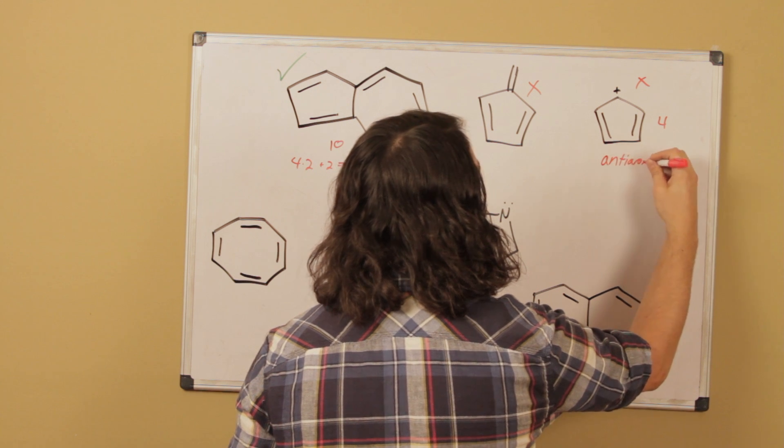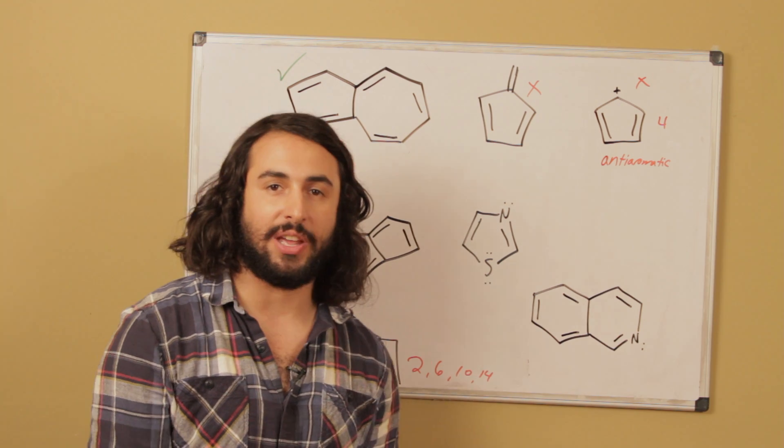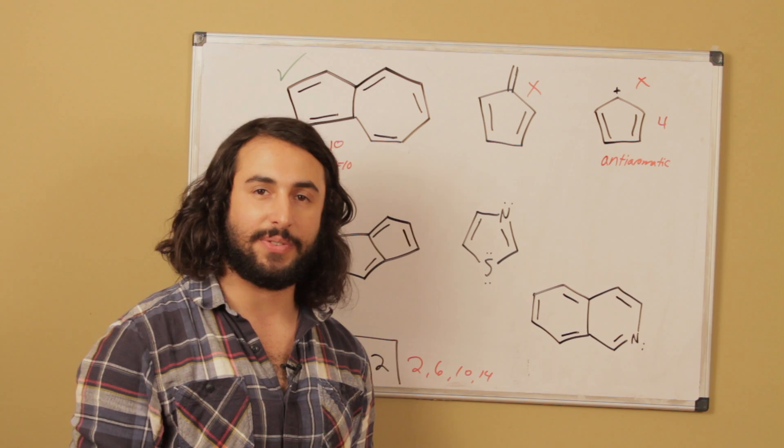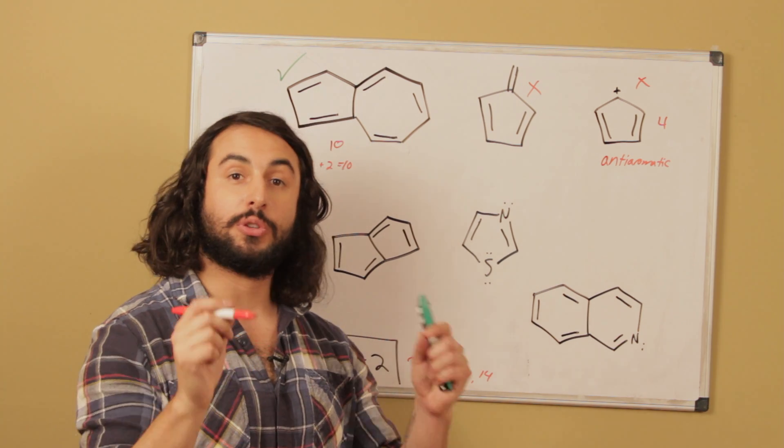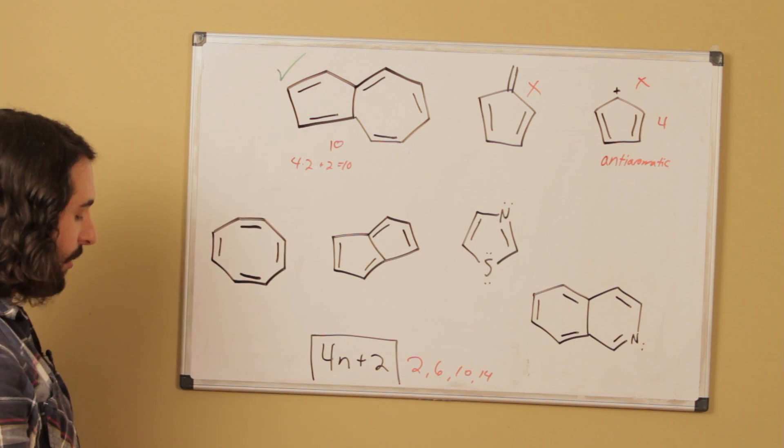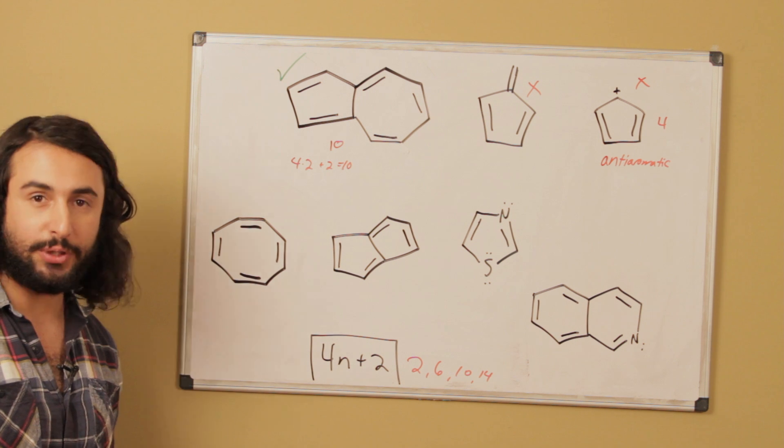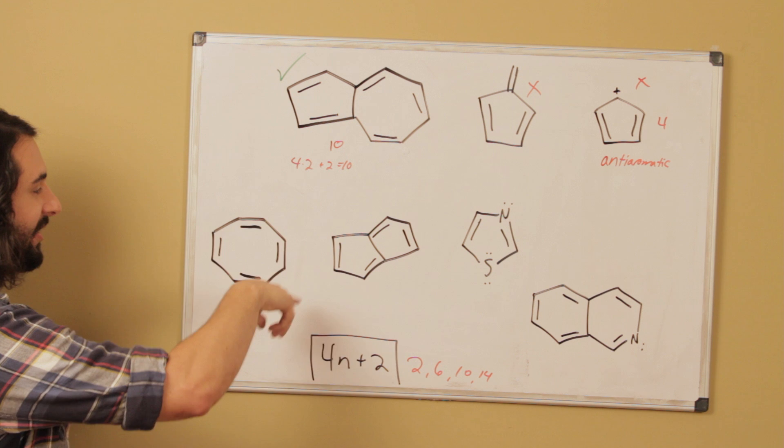Anti-aromatic is a molecule that is fully planar, is fully conjugated, but has a number of pi electrons that does not satisfy Huckel's rule. So 4, 8, 12, 16, etc. Those are going to be anti-aromatic. Okay, let's look at this one over here now. Once again, this is fully planar and fully conjugated. These are all sp2 carbons and these pi bonds do resonate around the entire ring.